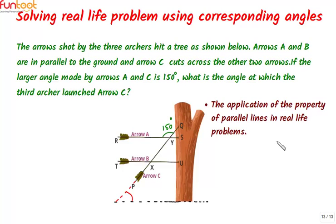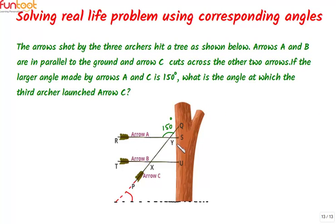By solving this problem we want to learn how to use the property of parallel lines in real life problems. It is given that these two arrows are parallel to the ground. Arrow A is parallel to the ground, arrow B is also parallel to the ground. That means arrow A and arrow B will be parallel to each other, because when two lines are parallel to the same line they are parallel to each other also.